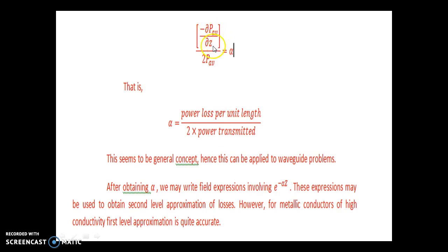Now, minus dP average divided by dz divided by 2P average is equal to alpha, that is alpha is equal to power loss per unit length in the direction of propagation divided by 2 into power transmitted.